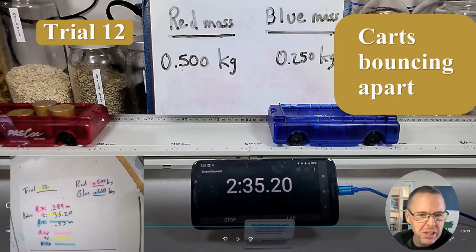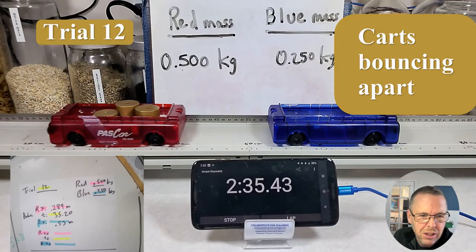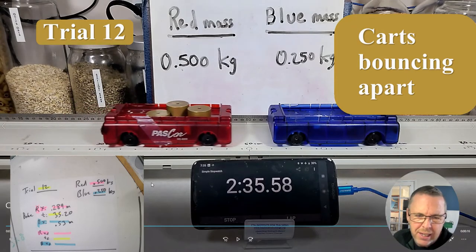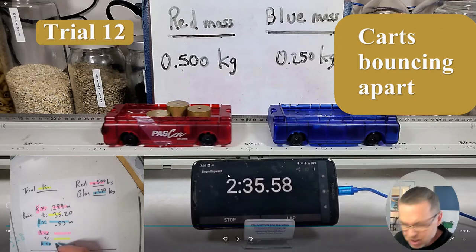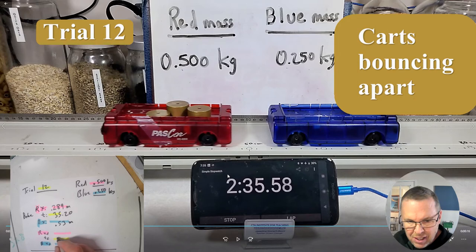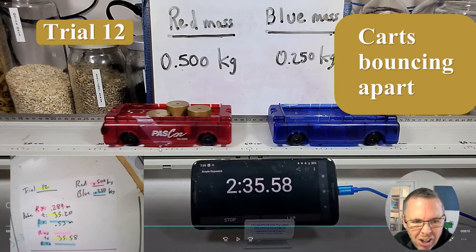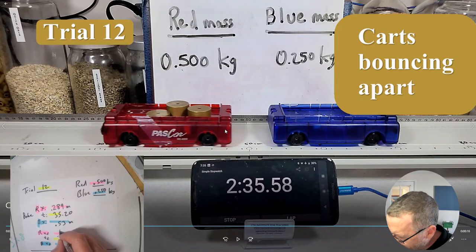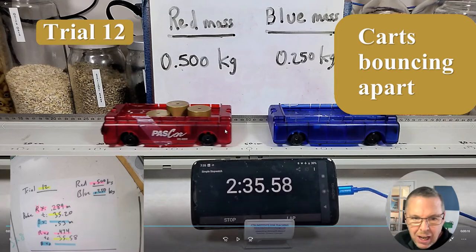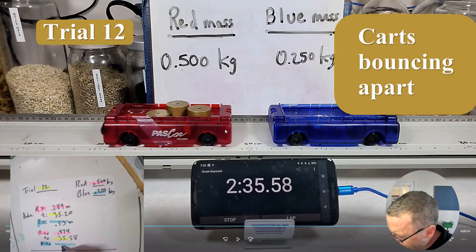So now I've got an initial position for both of these carts and I'm going to let it run a little bit until somewhere before it hits. So right now then I'm going to record my new time. So my time here before the collision is 35.58. My red car is at looks like 48, 47.4 I'm going to call that and my blue car is still at 53 centimeters.